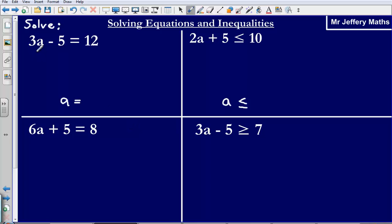So let's go about answering this one. We've got 3A minus 5 equals 12. Now what I'm trying to do is I'm trying to get down to a situation where I've got the A on its own on one side of the equal sign and I've got a number on the other.